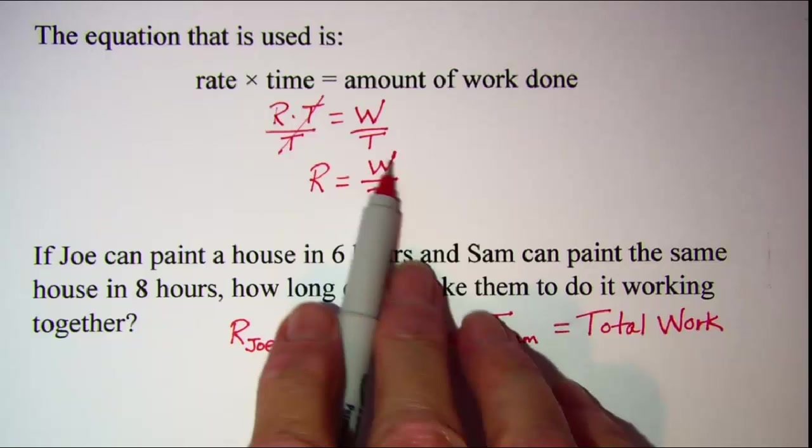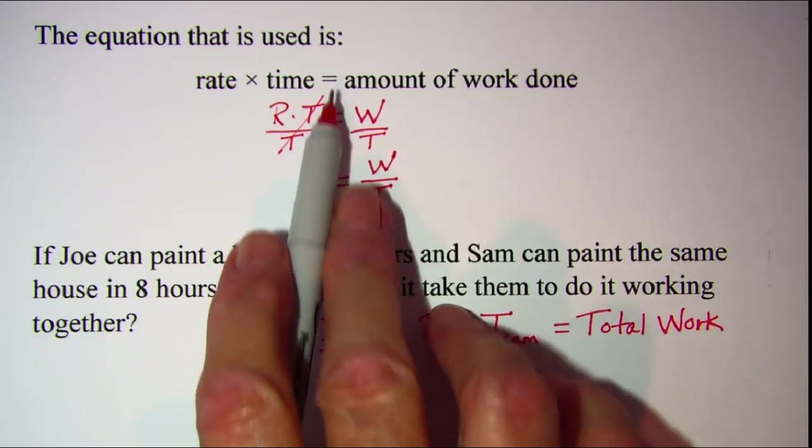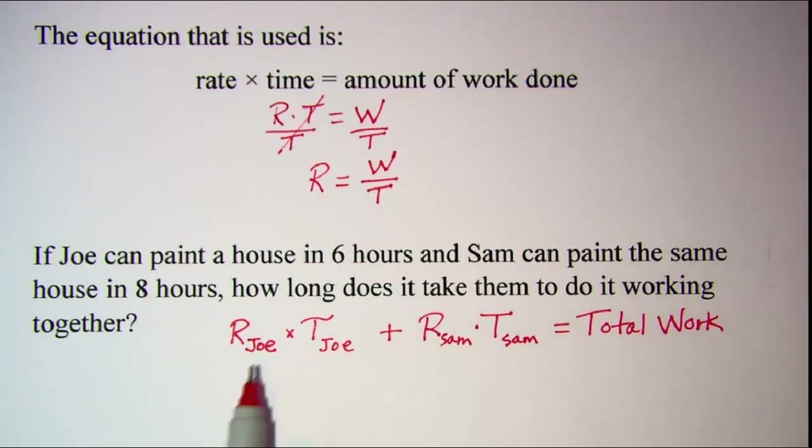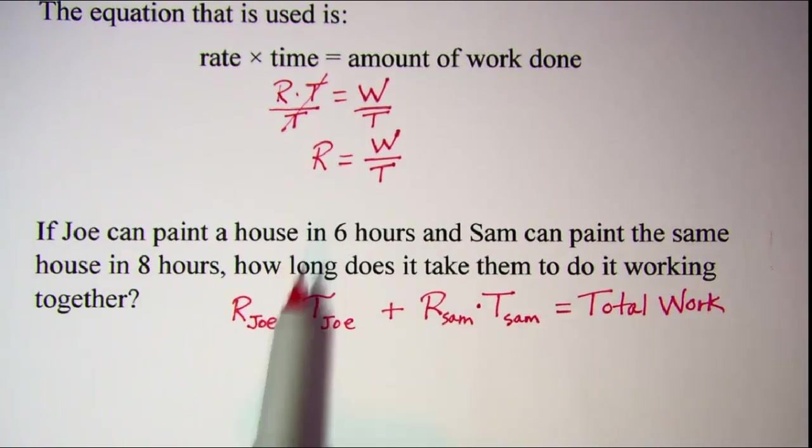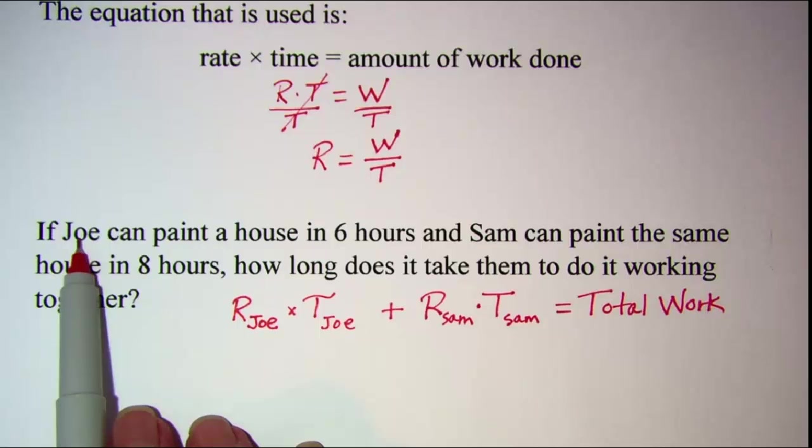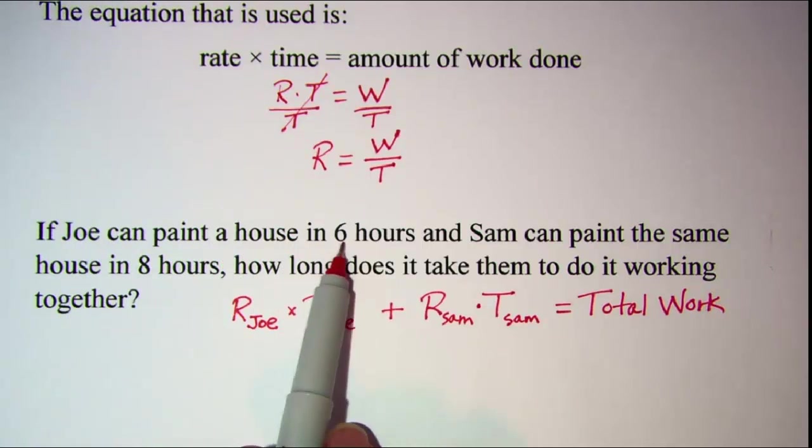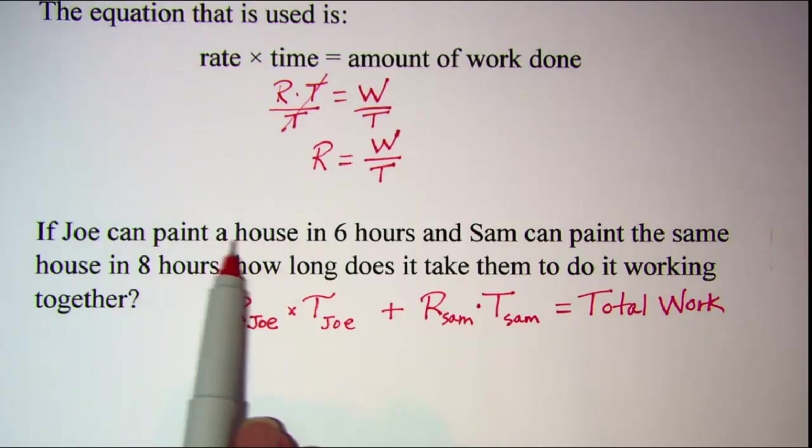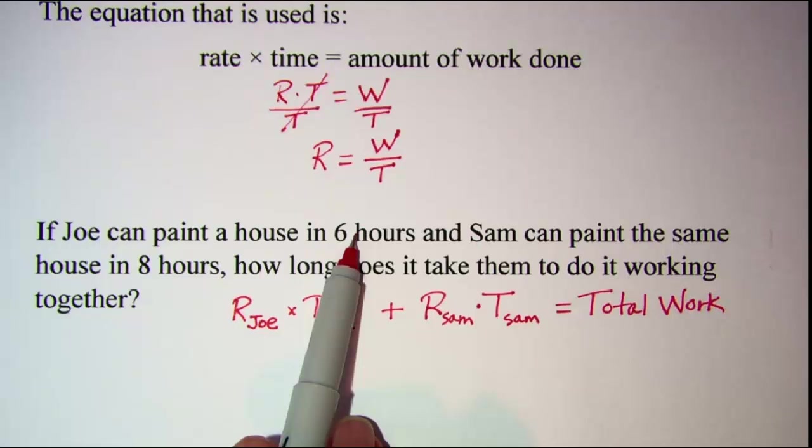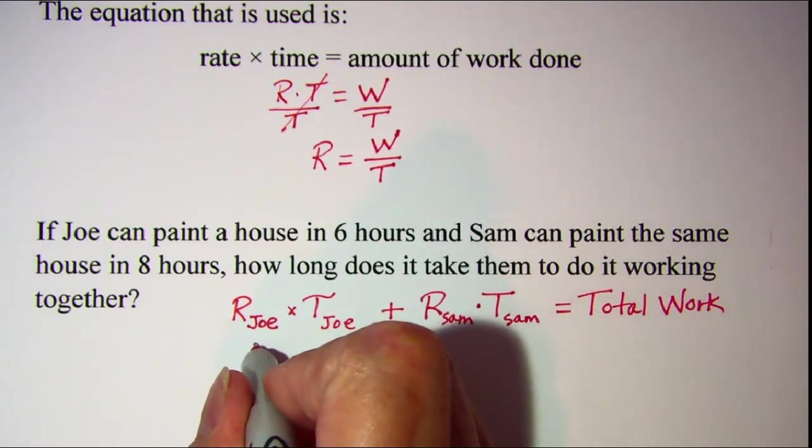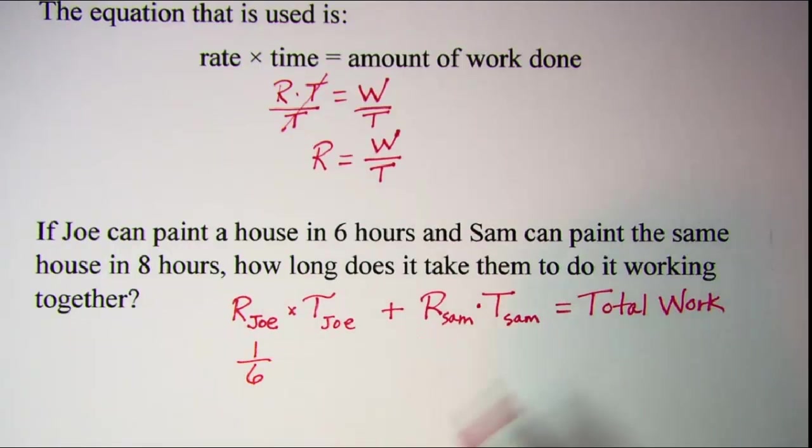Now we're going to use this equation here that I derived from this first one to find Joe's rate and to find Sam's rate. We'll take this first sentence: it says Joe can paint a house in six hours. So a house, basically just one house. So we have one house is the amount of work done and six hours is the time, so Joe's rate is one-sixth, or if you wanted to talk about in terms of rate you could say one-sixth of the house per hour.